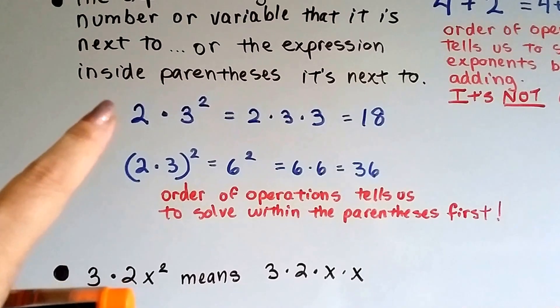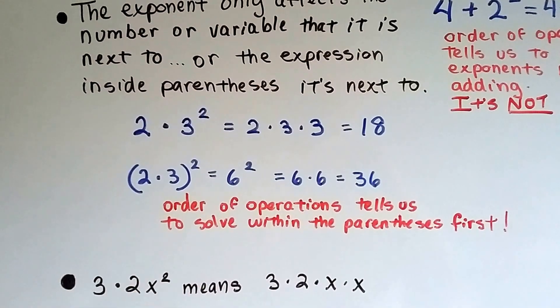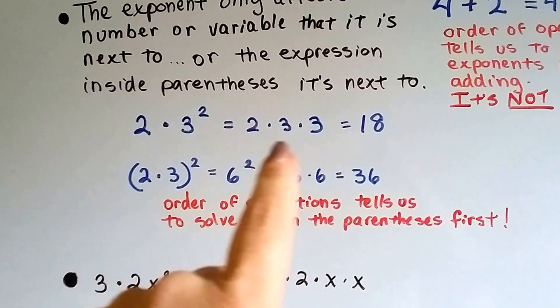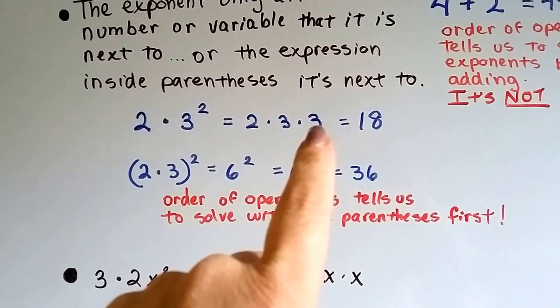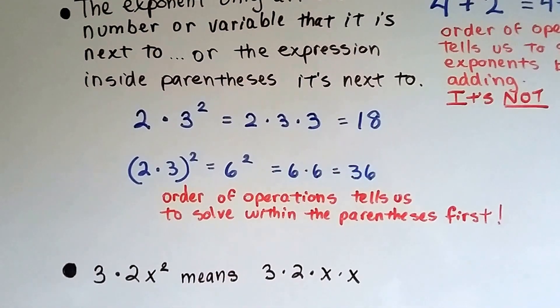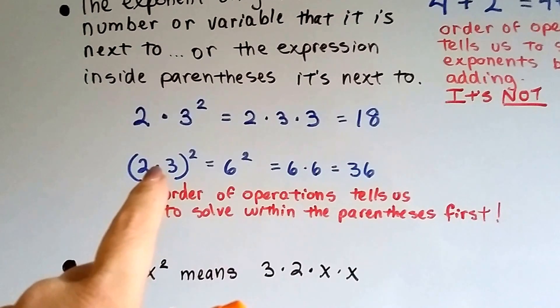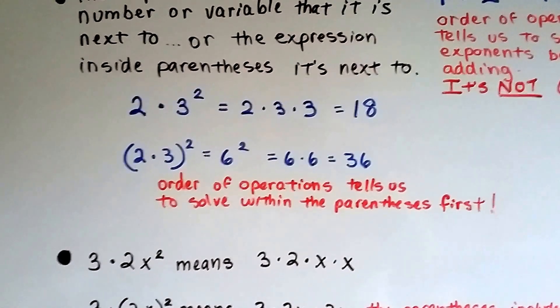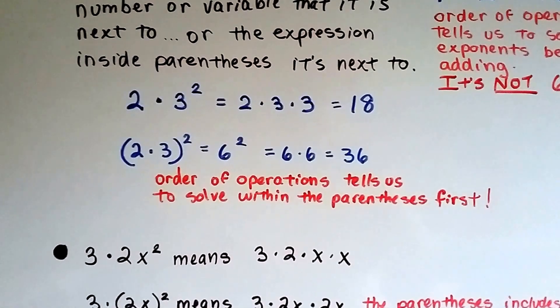So if we had 2 times 3 to the second power, that means we have 2 times 3 times 3. 2 times 3 is 6 times 3 is 18, and our answer is 18. But if it's inside parentheses, that means it affects everything inside because we do inside of parentheses first. That's PEMDAS. That's order of operations.